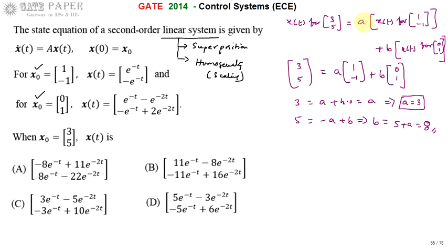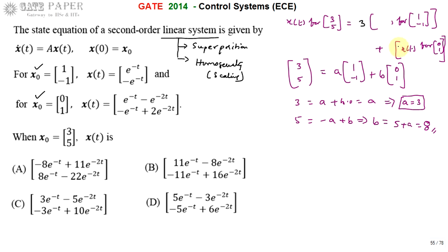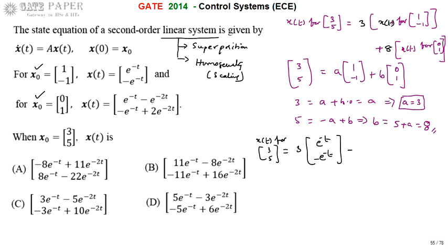Now we can write x(t) for [3, 5] by replacing a with 3 and b with 8. So x(t) for [3, 5] = 3 times x(t) for [1, -1] plus 8 times x(t) for [0, 1]. The known expression for x_naught = [1, -1] is e^(-t), and for x_naught = [0, 1] we substitute accordingly.